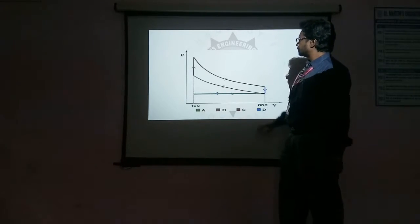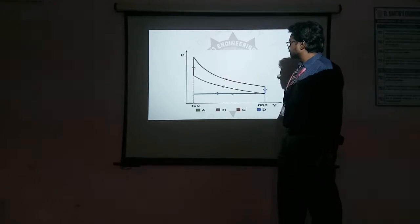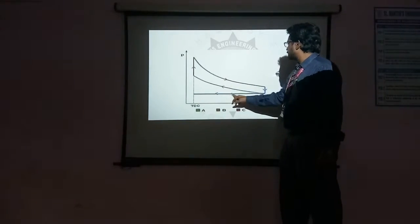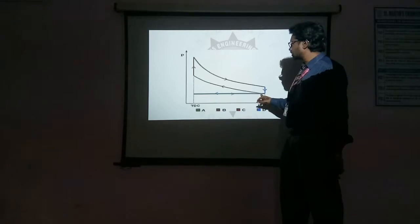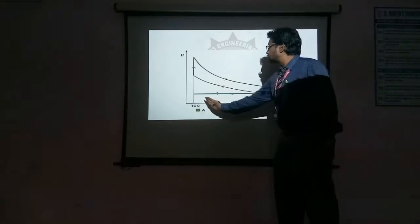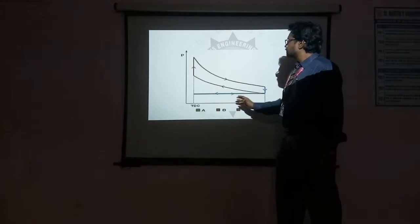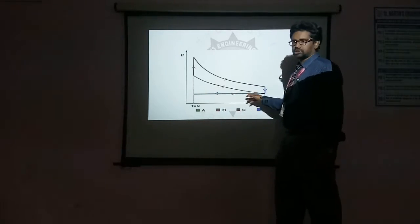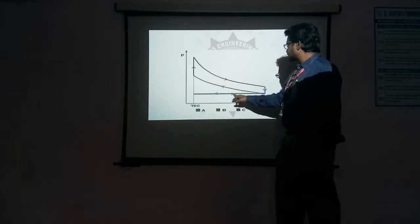With respect to the PV diagram, this is the typical PV diagram. If you observe, this green line represents the suction stroke. During the suction stroke, the volume of the cylinder increases at constant pressure. This is the suction stroke.